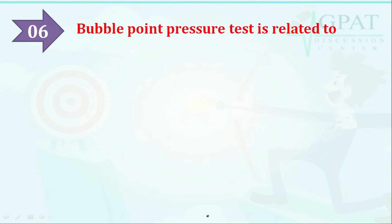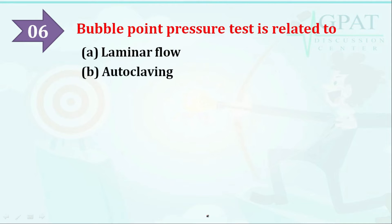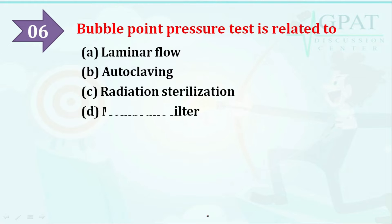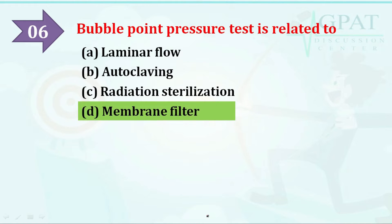The next question: bubble point pressure test is related to — option A: laminar flow, option B: autoclaving, option C: radiation sterilization, option D: membrane filter. The correct answer is membrane filter. Bubble point pressure test is related to membrane filter.